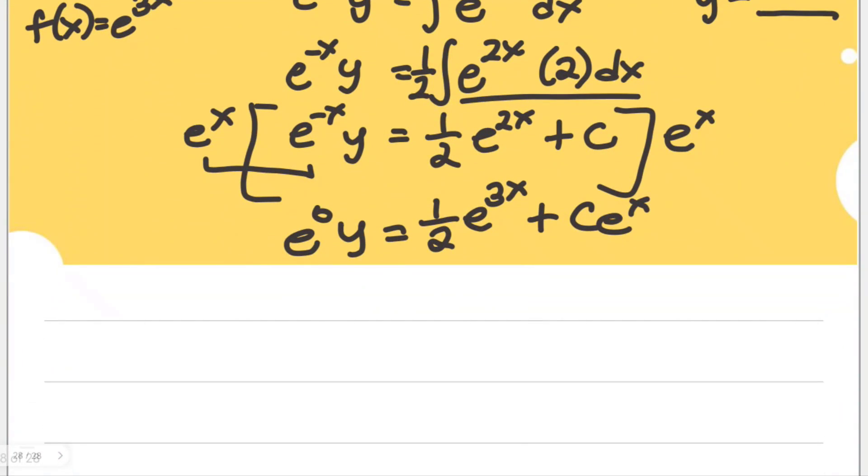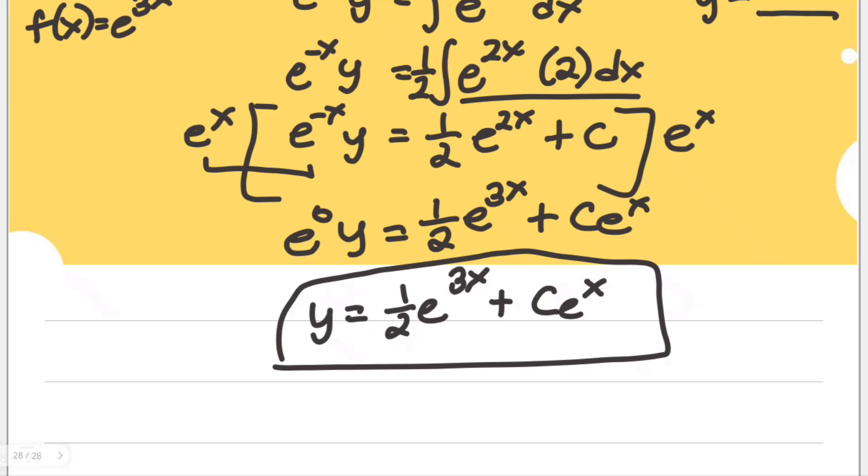In short, the final form here is y is equal to 1 half e to the power of 3x plus c e to the power of x. This is already the solution of our given linear equation. We are done with this.